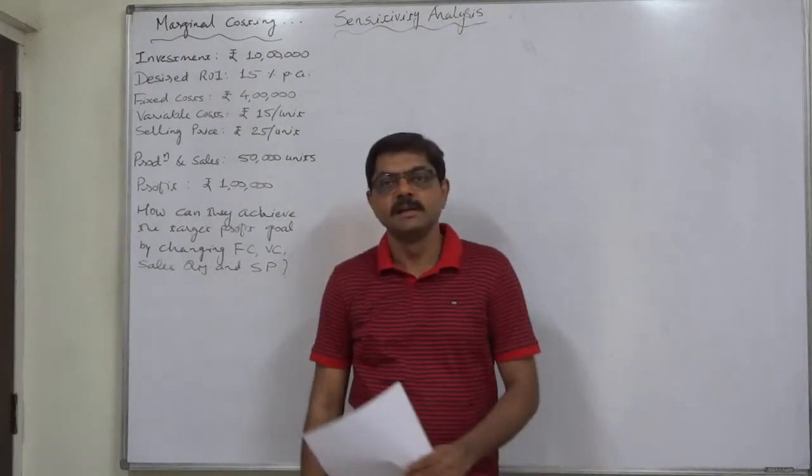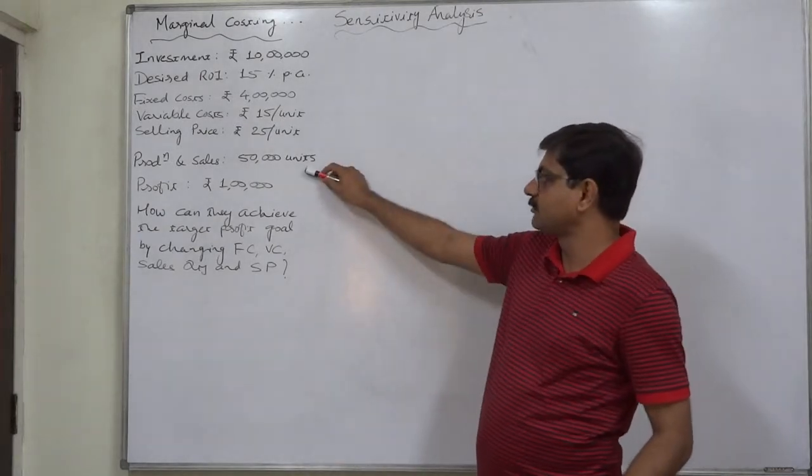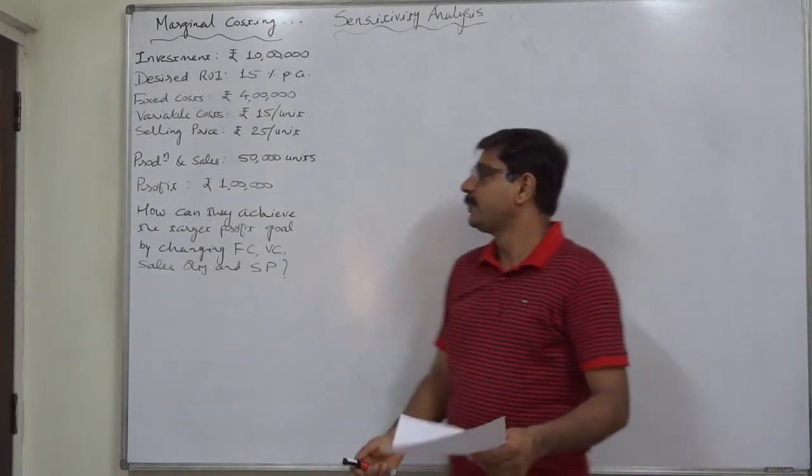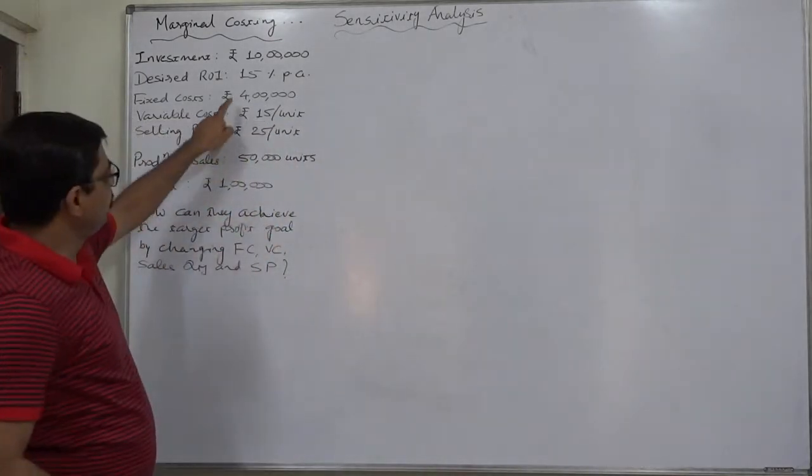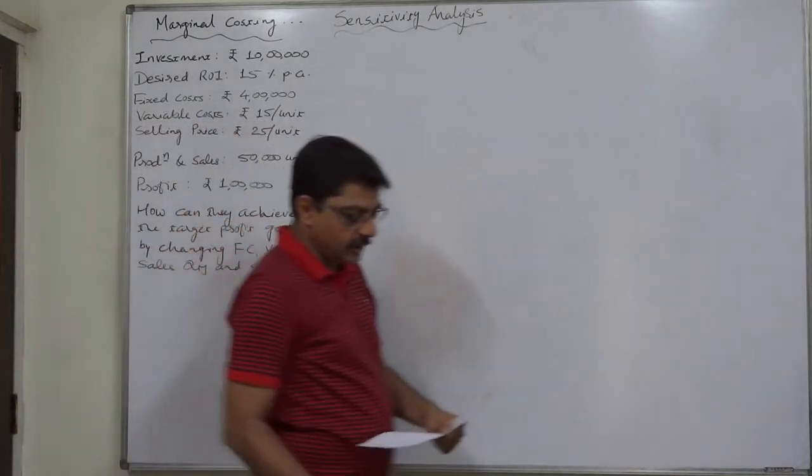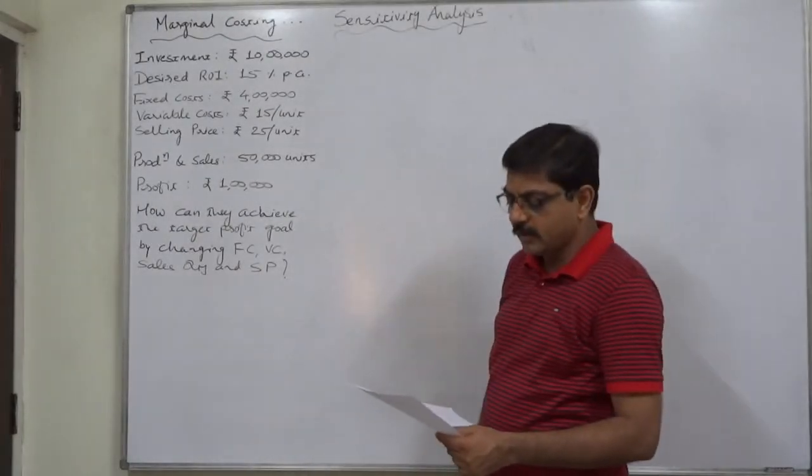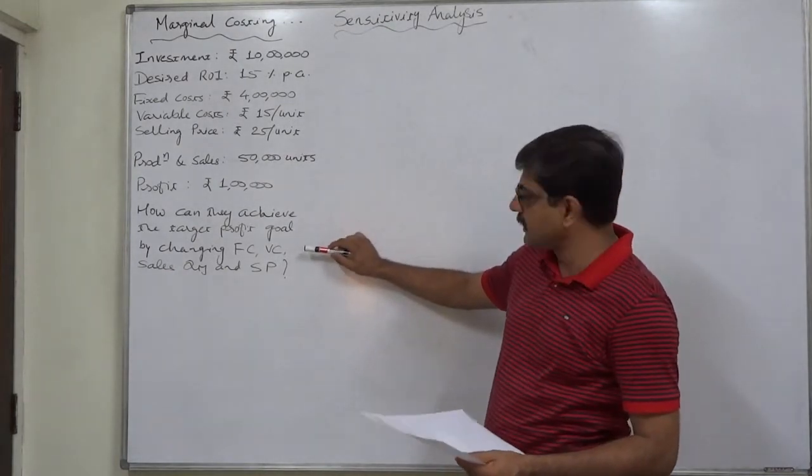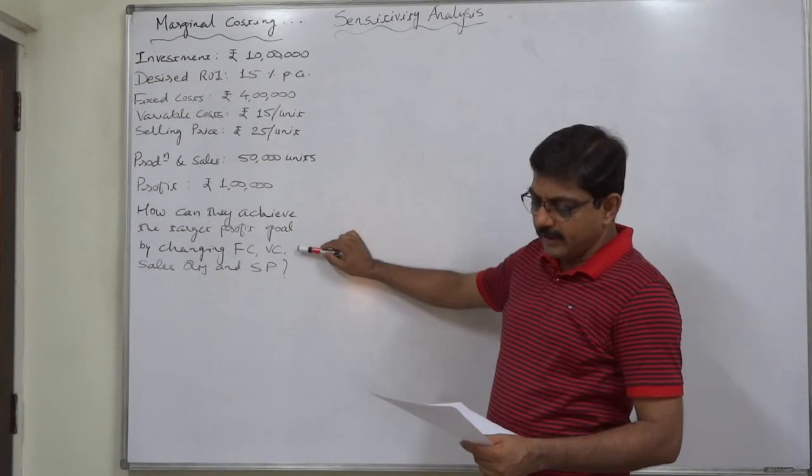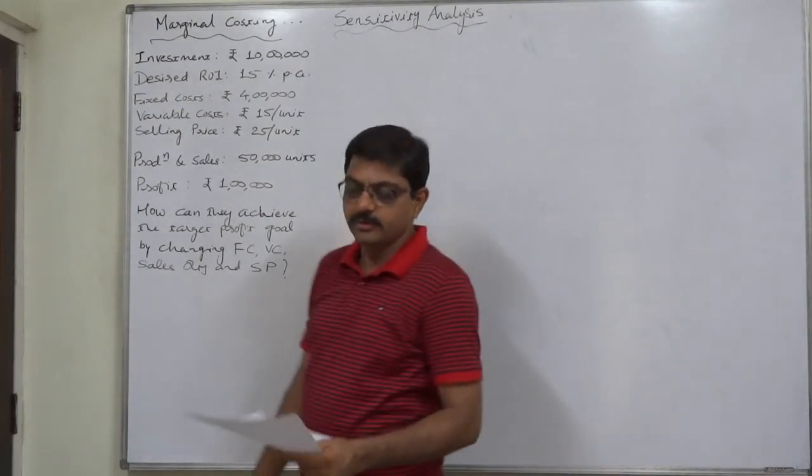That means 1 lakh is the actual profit earned during the last year by selling 50,000 units at the rate of rupees 25 per unit. The variable cost is rupees 15 and fixed cost amounts to rupees 4 lakh per annum. How can the management achieve their target profit goal by varying different variables like fixed cost, variable cost, quantity sold, and increasing the price per unit?